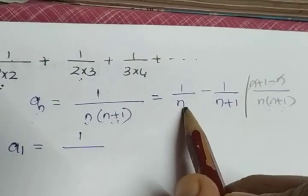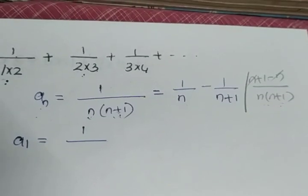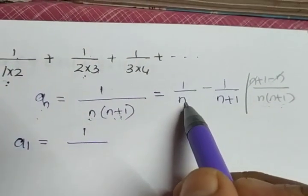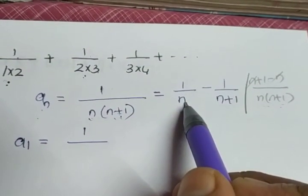So this term can be written like this: 1 by n minus 1 by n plus 1. And here we are going to substitute the value of n as 1, 2, 3 etc.